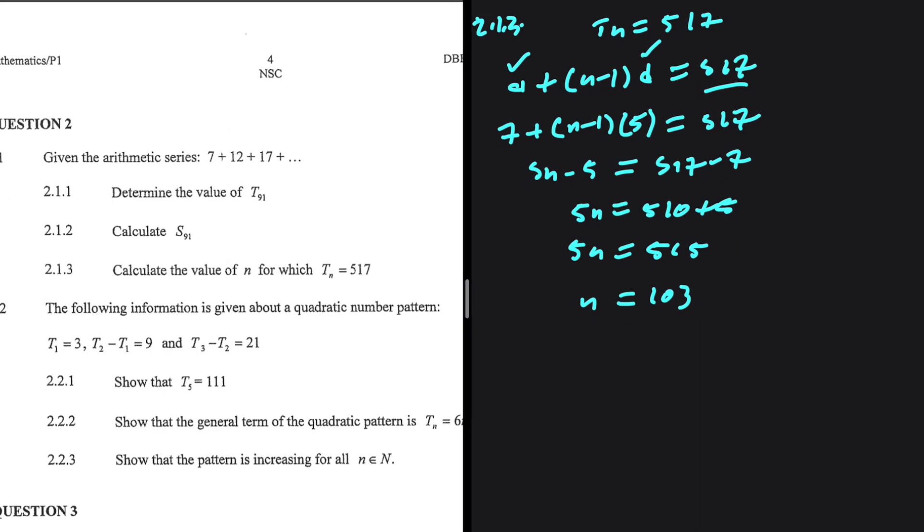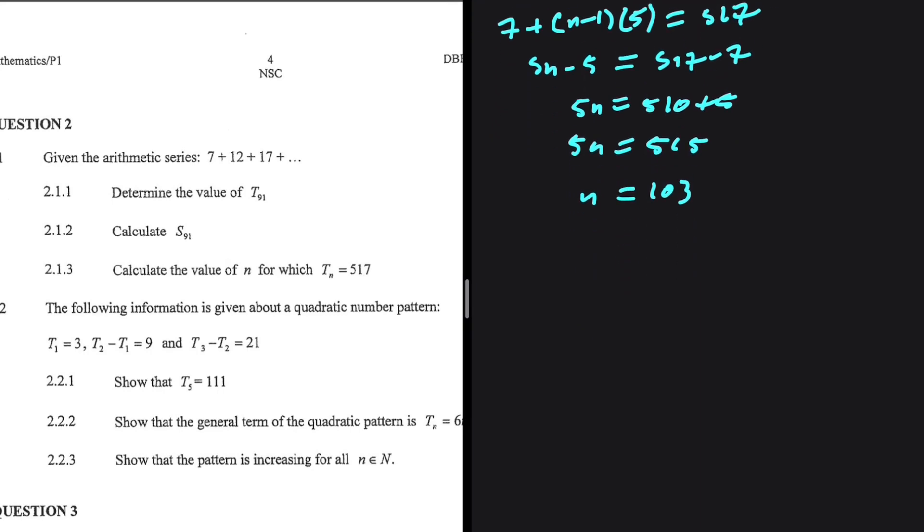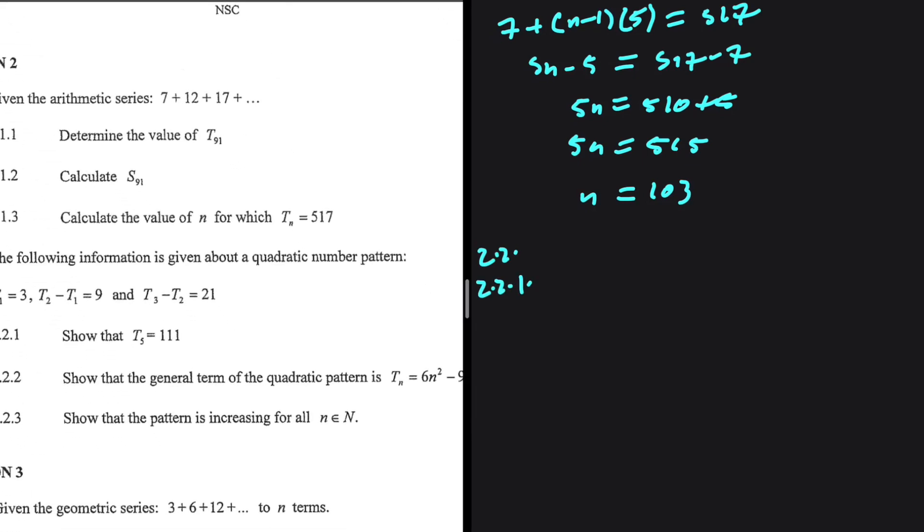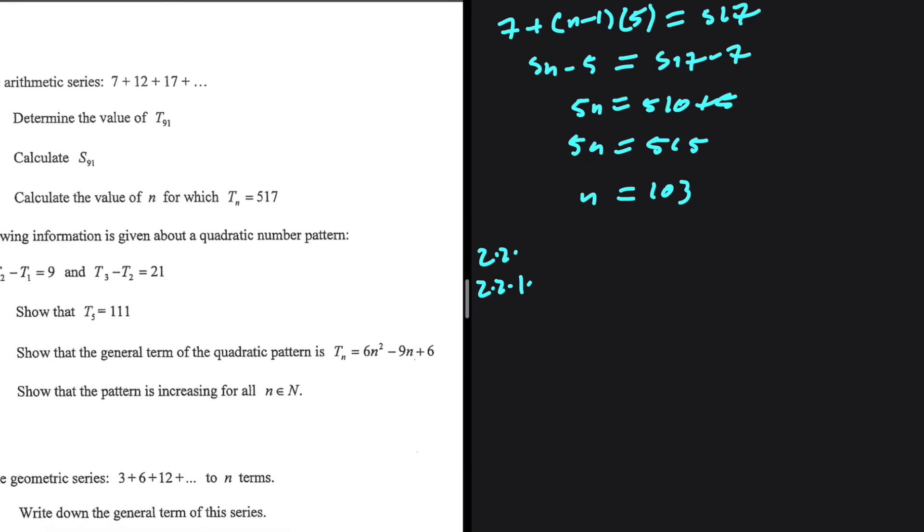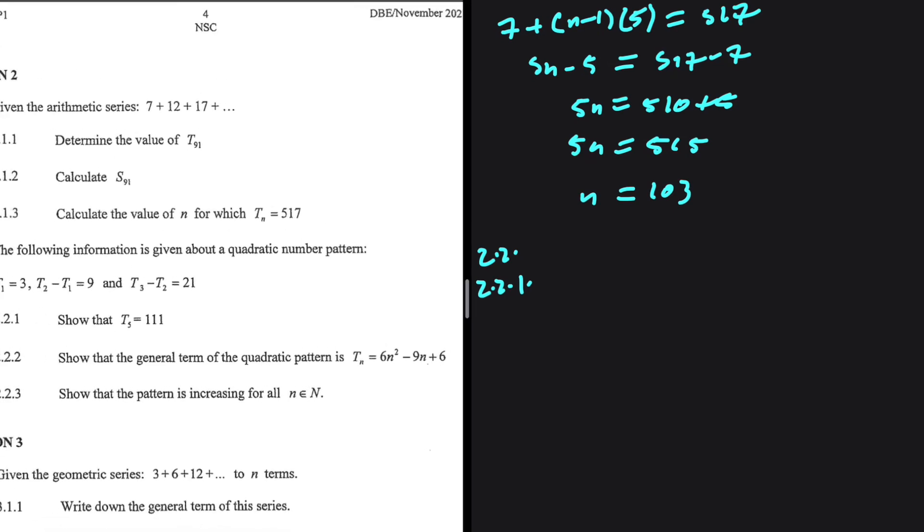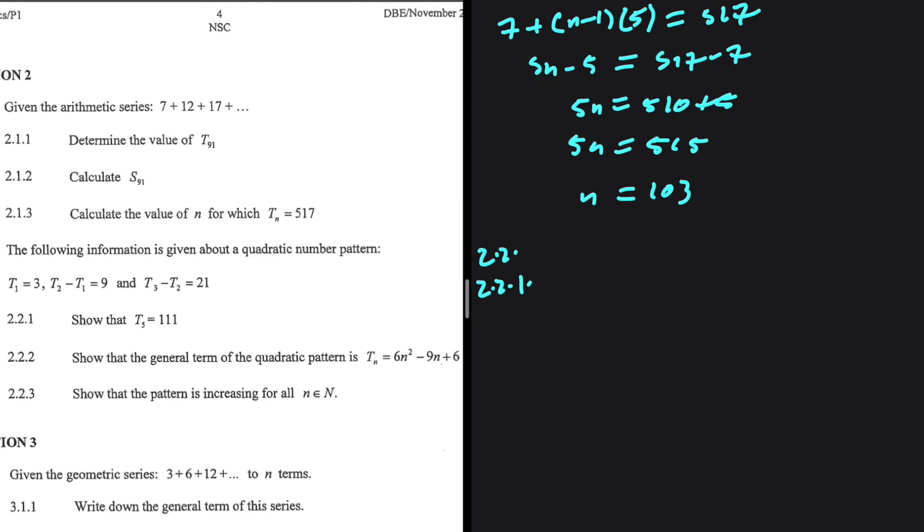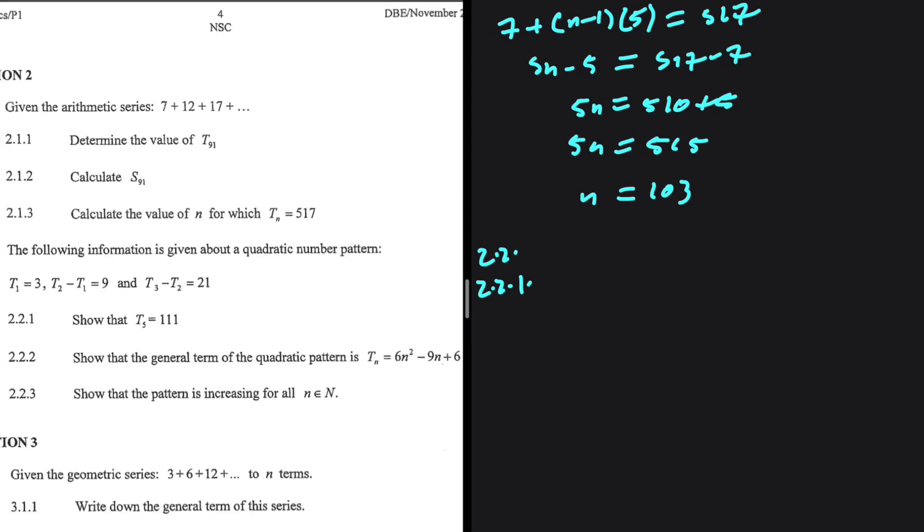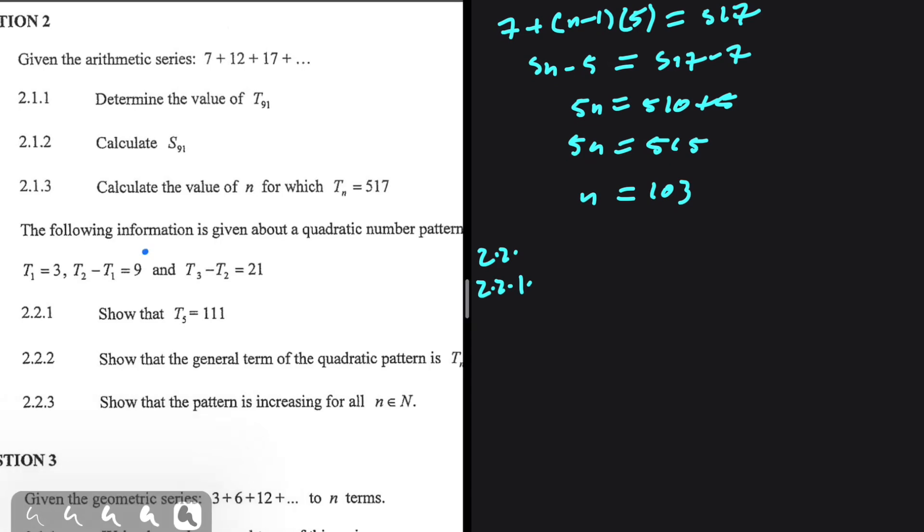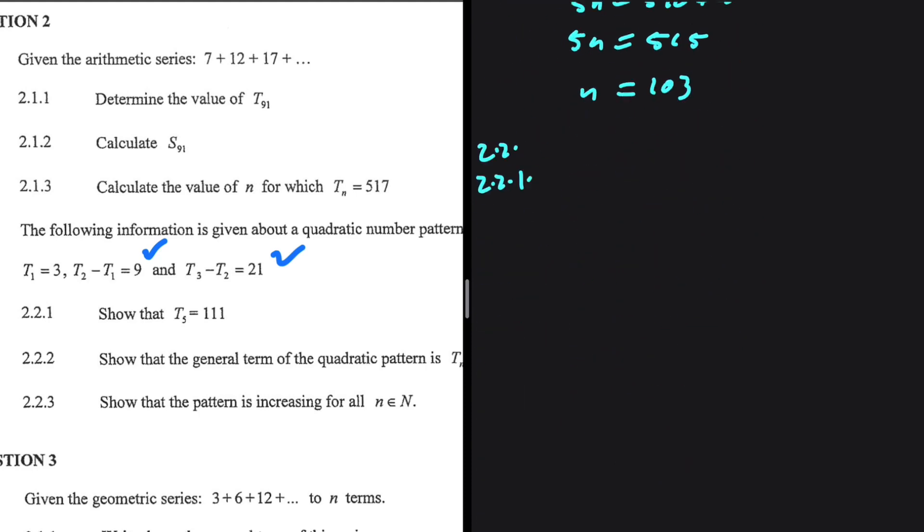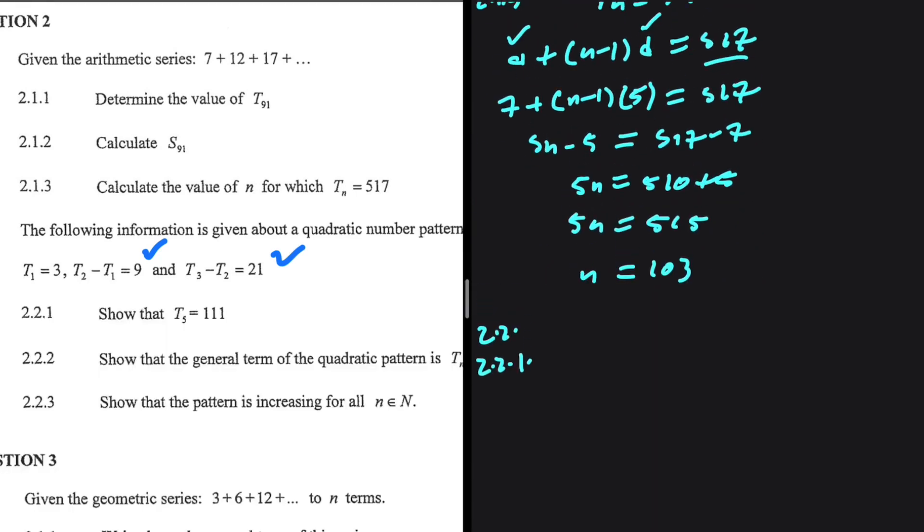So that is 2.1.1 to 2.1.3. Let's go ahead and take a look at 2.2 and 2.2.1. So 2.2, quite an interesting one, but there ain't nothing to it but to do it. Let's go ahead and take a look. The following information is given about a quadratic number pattern. T1 equals 3. T2 minus T1 equals 9. T3 minus T2 equals 21. So let's go ahead and make sense of that.